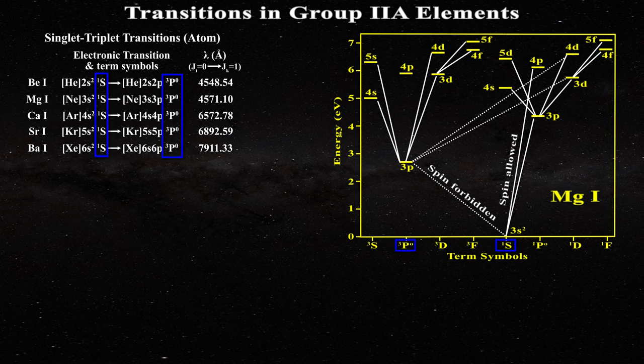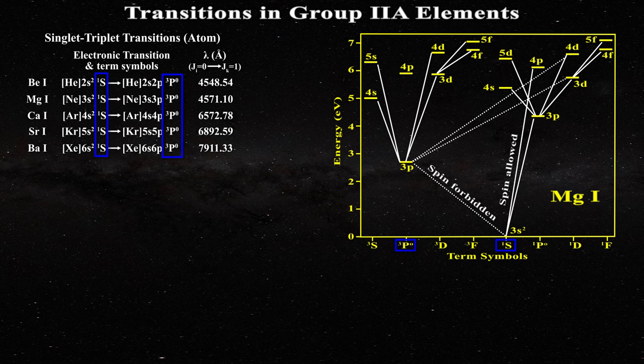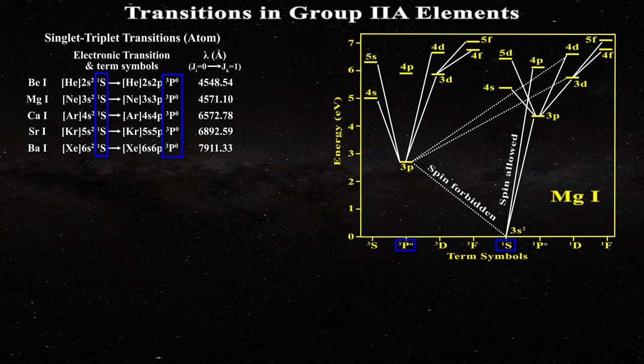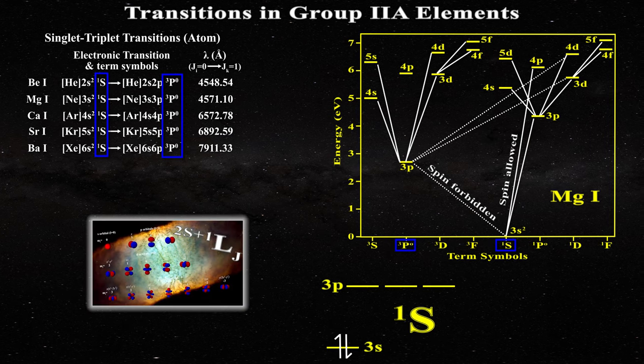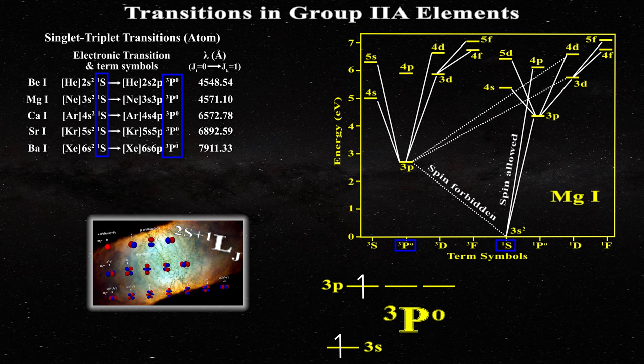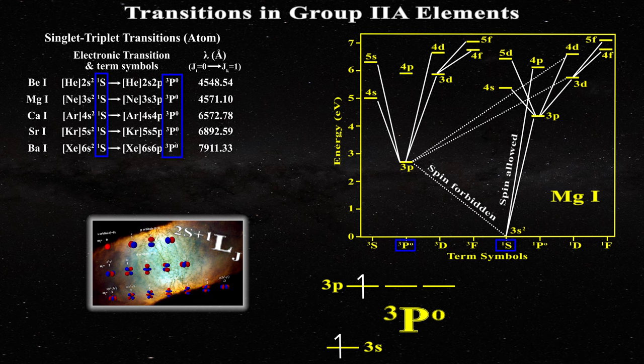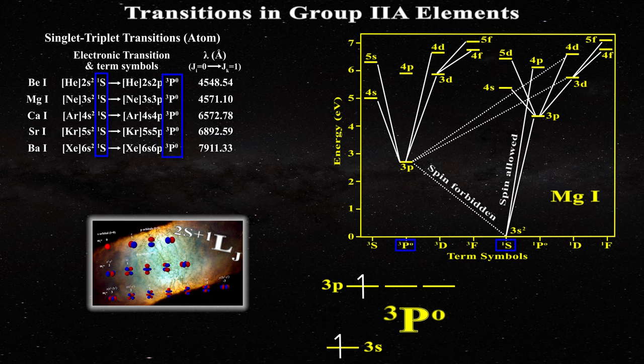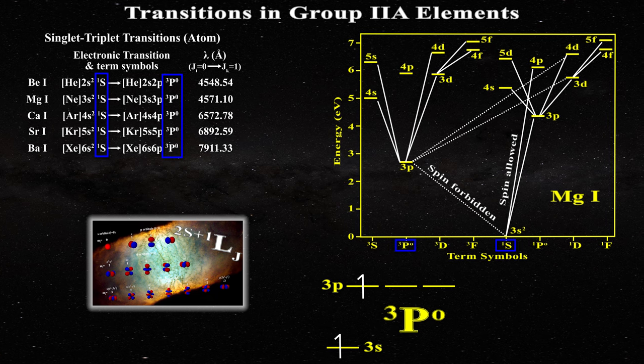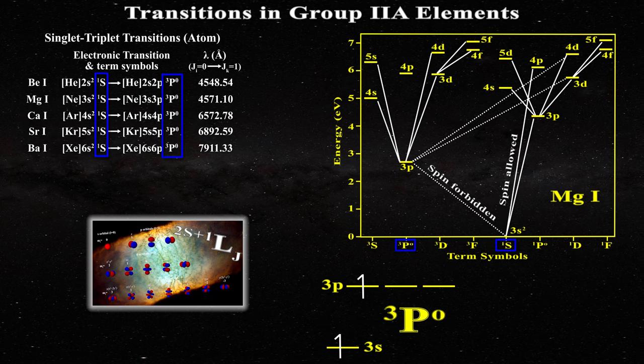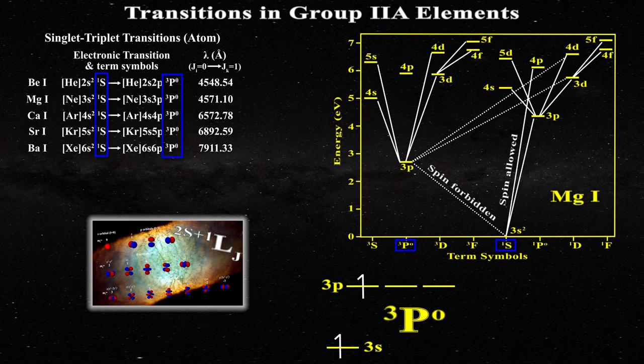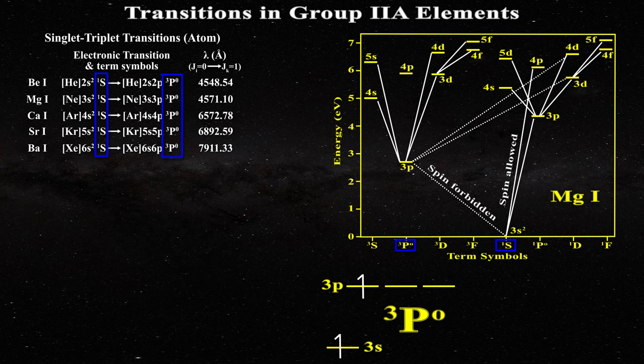Such transitions always involve a change in the multiplicity of the term symbol. In this table, the multiplicity of the terms associated with the transitions changed from singlet to triplet. The multiplicity of a term symbol was discussed in the last video. In any event, if the multiplicity changes for a certain transition, the electron changed its spin state. But that is not allowed in electric dipole transitions. Of course, spin forbidden transitions do occur in the Fraunhofer spectrum. These are seen even if they are weaker because other mechanisms can be involved in line formation. This includes either magnetic dipole or electric quadrupole mechanisms.